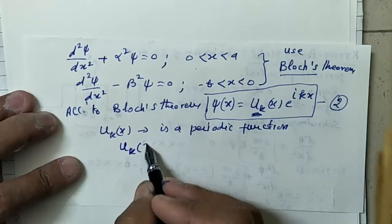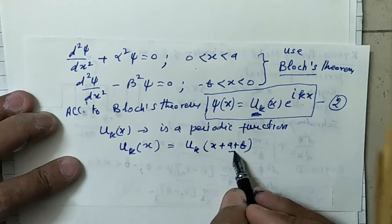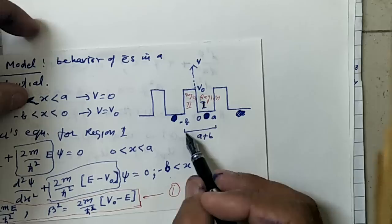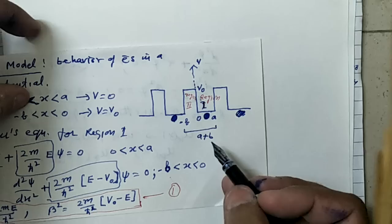Because we have a periodic potential, u_k(x) must satisfy u_k(x) = u_k(x + a + b). Since the period of the potential is a + b, after this interval the function repeats — so we get the same value.